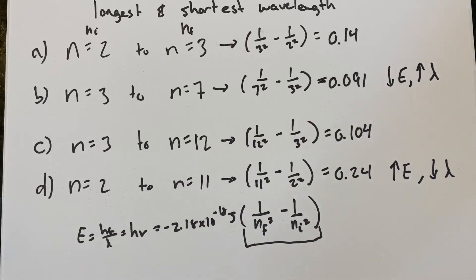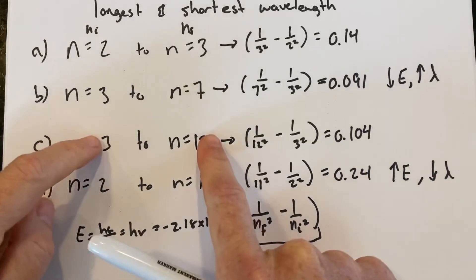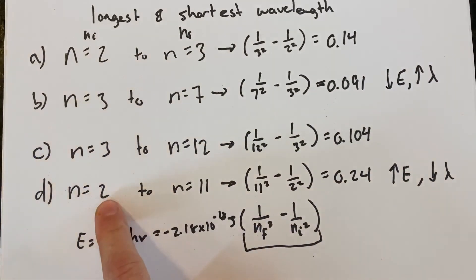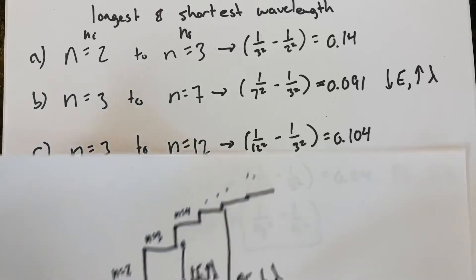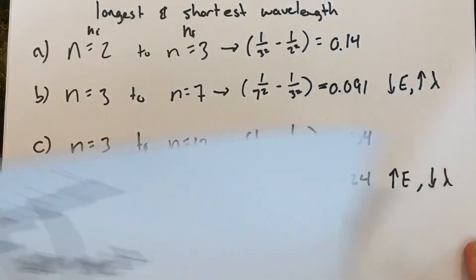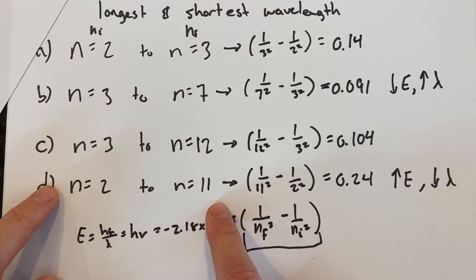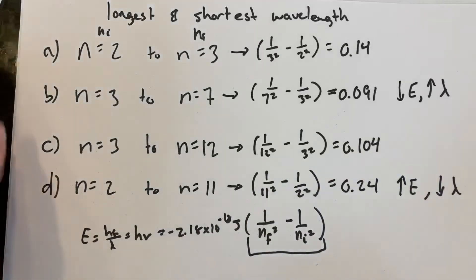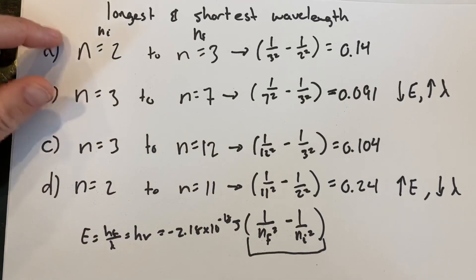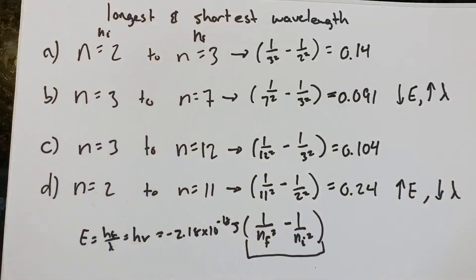These weren't very obvious from the start. You could look at the differences and say this is a difference of 9 and this is a difference of 9, and we know the step for n equals 2 is bigger than the step for n equals 3 — so that might have been a quick way to do it. But when it comes to comparing the others, you almost have to do the calculation just to make sure. Hope that helps!